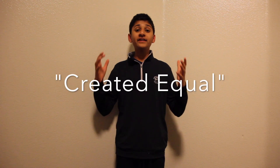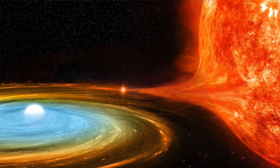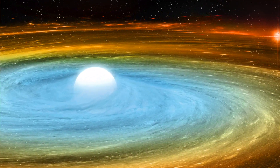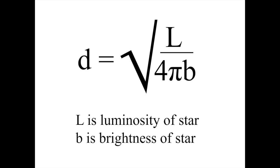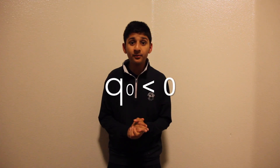All type 1a supernovae are created equal — when a white dwarf accretes matter from a binary companion and explodes, they all have the same peak luminosity. Based on the brightness of type 1a supernovae on Earth and their universal peak luminosity, the teams could calculate the distances to the type 1a supernovae. Using the distances to the supernovae and their redshifts, the teams could calculate the deceleration parameter. The deceleration parameter came out negative, meaning the expansion of the universe is actually accelerating.